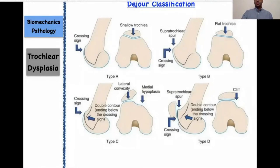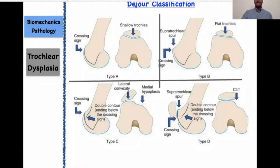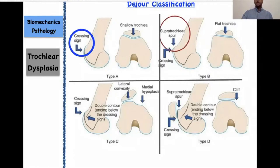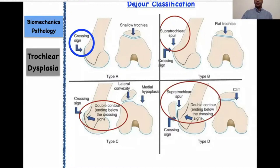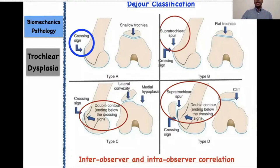In terms of the shape of the trochlea, the Dejour classification is the most commonly used to classify trochlear dysplasia. It is essentially divided into four types. Understanding the crossing sign is important because it is abnormal in each type. Depending on whether there is a supratrochlear spur, double contour, or both, they are divided into A, B, C, and D with increasing severity. The slight problem with this classification is that inter-observer and intra-observer correlation is not good, which is universally published.